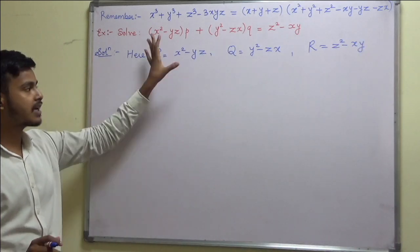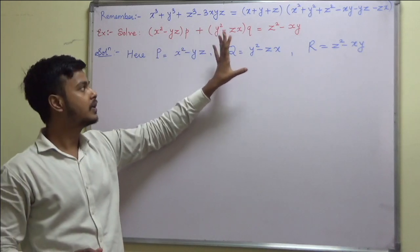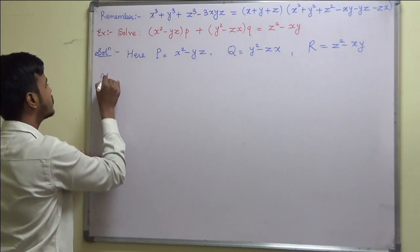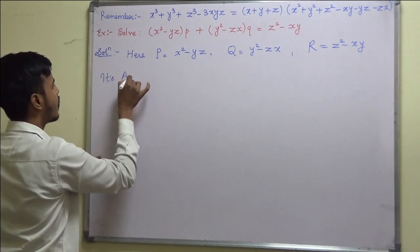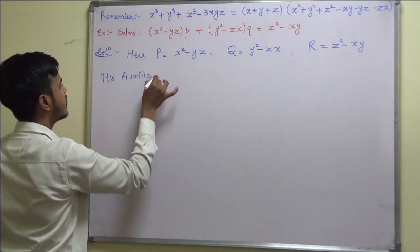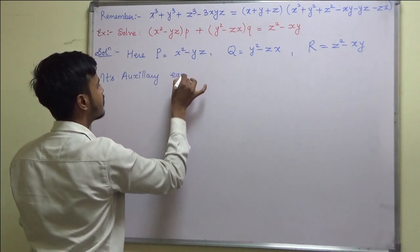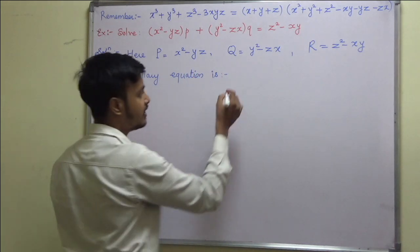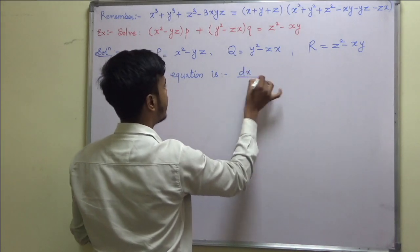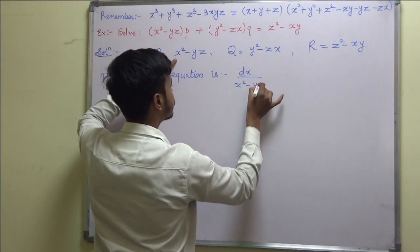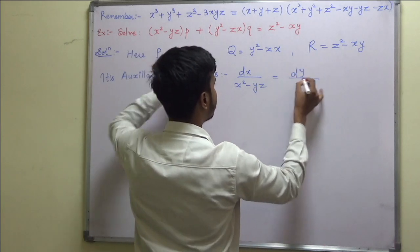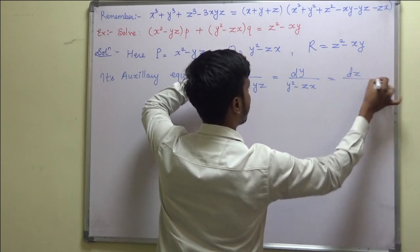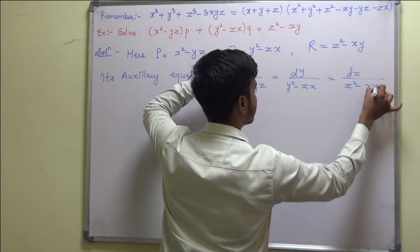Whenever we are dealing with Lagrange's equation, we just need to write down P, Q, R and then write down its auxiliary equation. The auxiliary equation is: dx/(x² - yz) = dy/(y² - zx) = dz/(z² - xy).